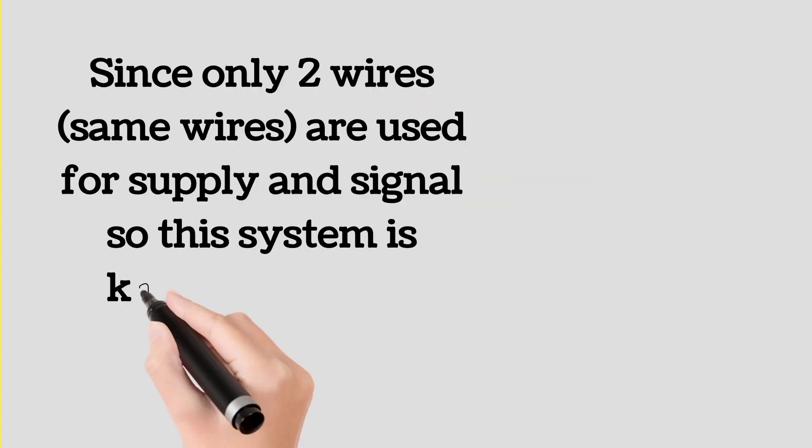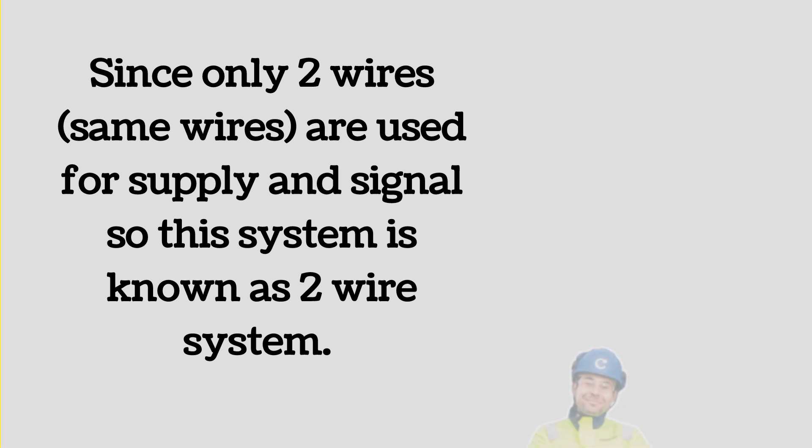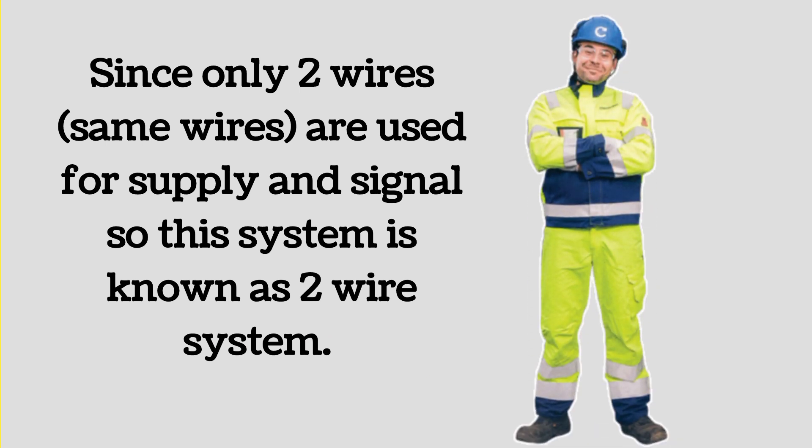Since only two wires or same wires are used for supply and signal, so this system is known as two-wire system. We have mainly two types of system for instrumentation, two-wire system and four-wire system.